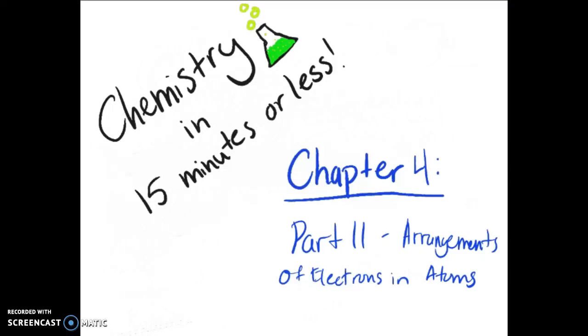Hello and welcome to Episode 6 of Chemistry in 15 Minutes or Less. My name is Audra and this review lesson is on Chapter 4, Part 2, Arrangements of Electrons and Atoms. We're going to need to hustle and move through this one pretty quickly because there's a lot to cover.